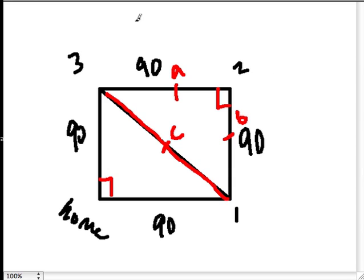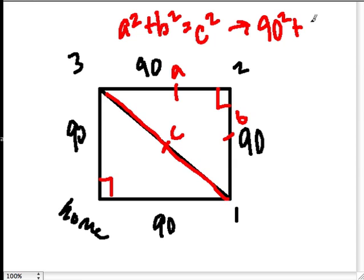So let's call this A and this B. We want to know what C is, so we can do A squared plus B squared equals C squared. And we can go through this process. It's 90 squared plus 90 squared equals something else squared.